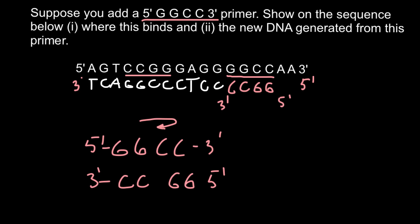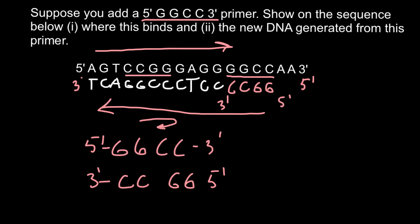So this is going to be the sequence that is going to be generated using this primer, and we have answered both questions: where this primer would bind, and what new sequence is generated for the new strand of DNA. In order to solve such problems, you have to remember that the new strand of DNA always grows from 5' to 3' direction, so the top strand grows in this direction and the lower strand grows in this direction.